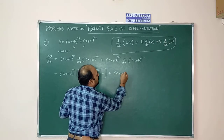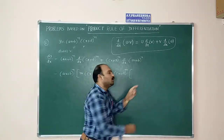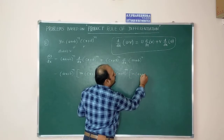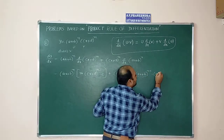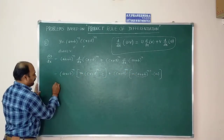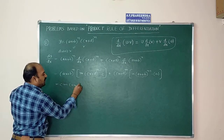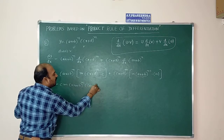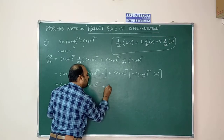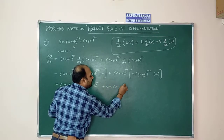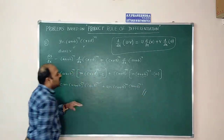Similarly, d/dx[(ax+b)ⁿ] = n·(ax+b)^(n-1)·a. Simplifying: dy/dx = mc·(ax+b)ⁿ·(cx+d)^(m-1) + na·(cx+d)ᵐ·(ax+b)^(n-1).